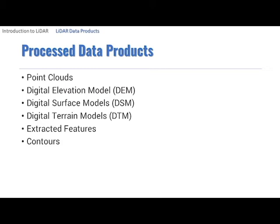Specific features are occasionally extracted from LiDAR data and provided as separate products. Buildings are a common type of extracted feature and are typically represented in a polygon data structure as footprints with maximum elevation.